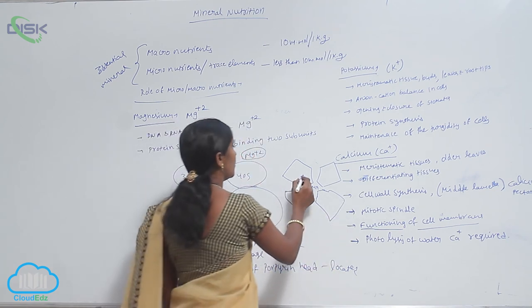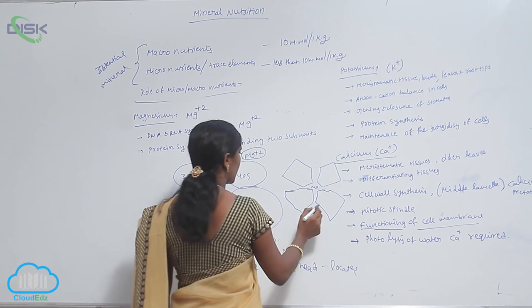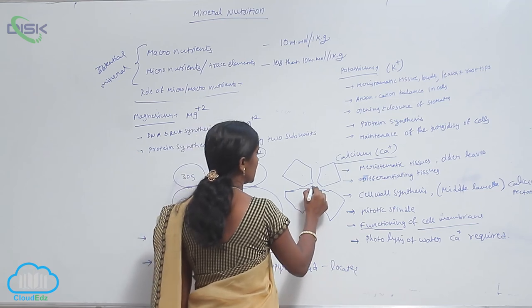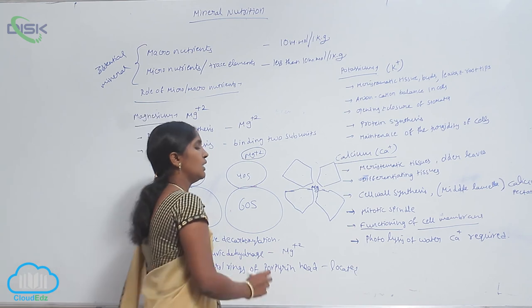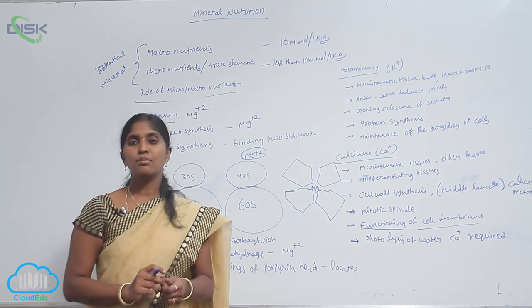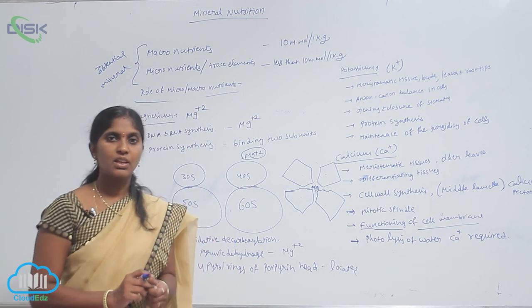These are the four pyrrole rings and this is the Mg+ ion that is centrally located. And in chlorophyll synthesis, Mg+ ion plays a very important role.